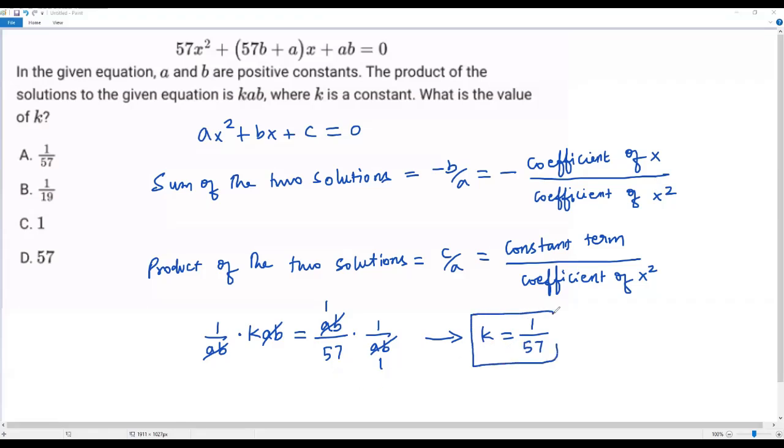So now I got the value of k. The value of k is 1 over 57, and we find 1 over 57 in option a. So the correct answer for this question is option a.